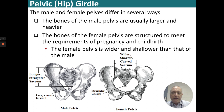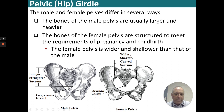The male and female pelvis differ in several ways. The bones of the male pelvis are usually larger and heavier, but the female are structured to meet the requirements of pregnancy and childbirth. The female pelvis is wider and shallower than the male. The sacrum is shorter in the female, while the male sacrum and coccyx are longer, extending almost down to the pubic symphysis. The female has a straighter coccyx, whereas the male's coccyx is curved forward.